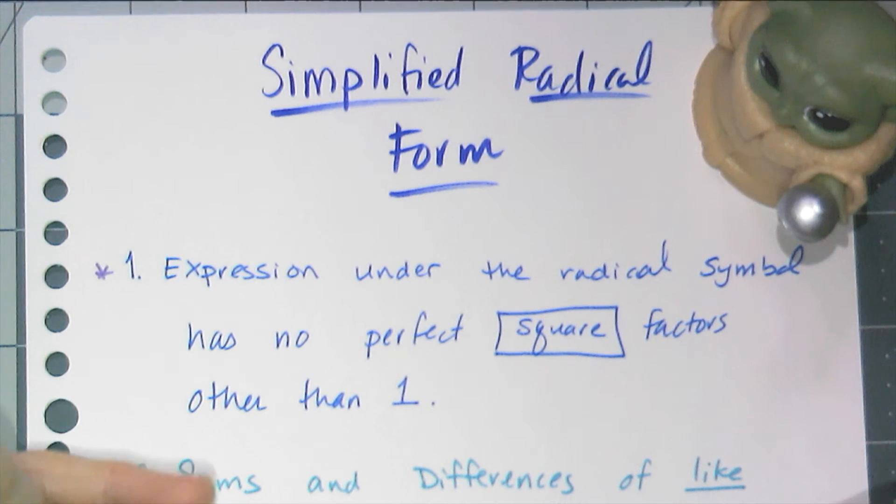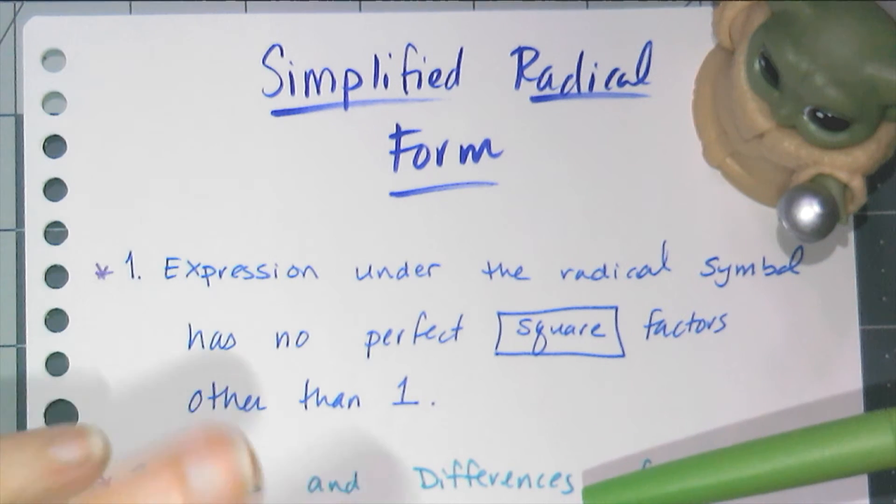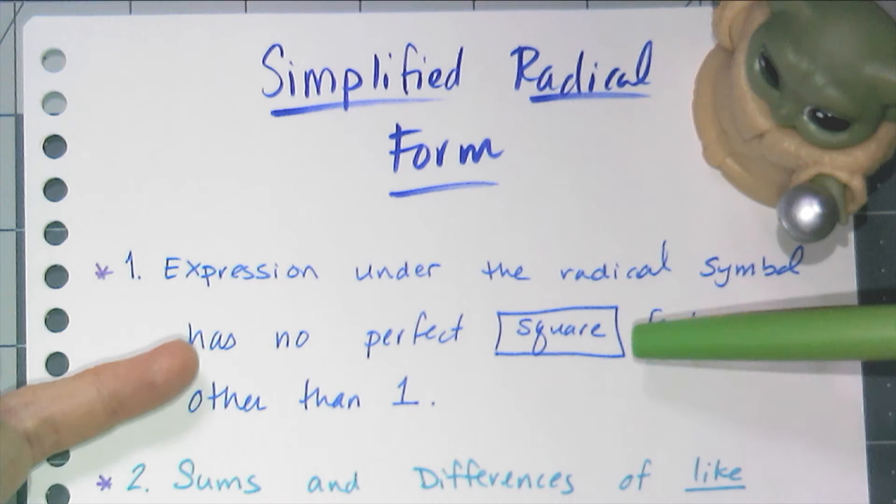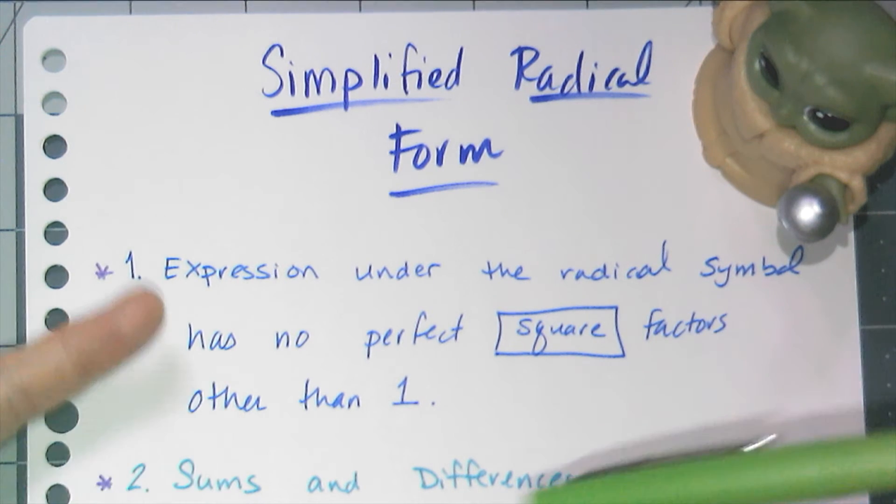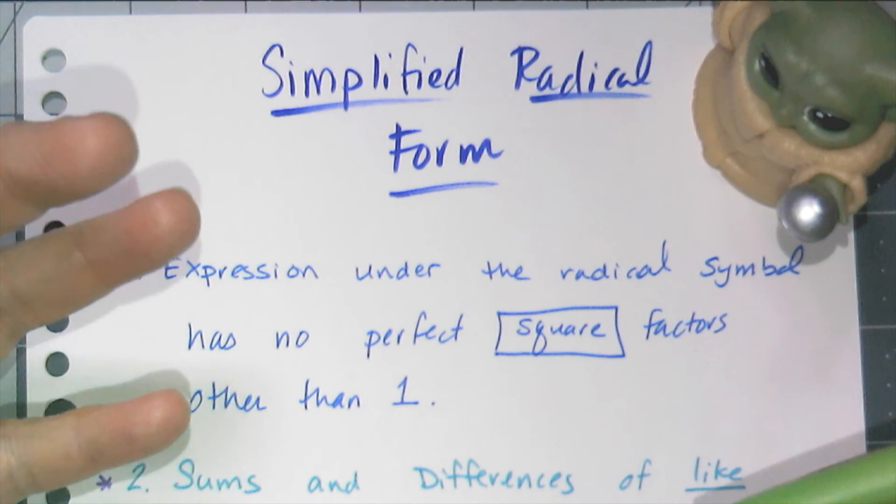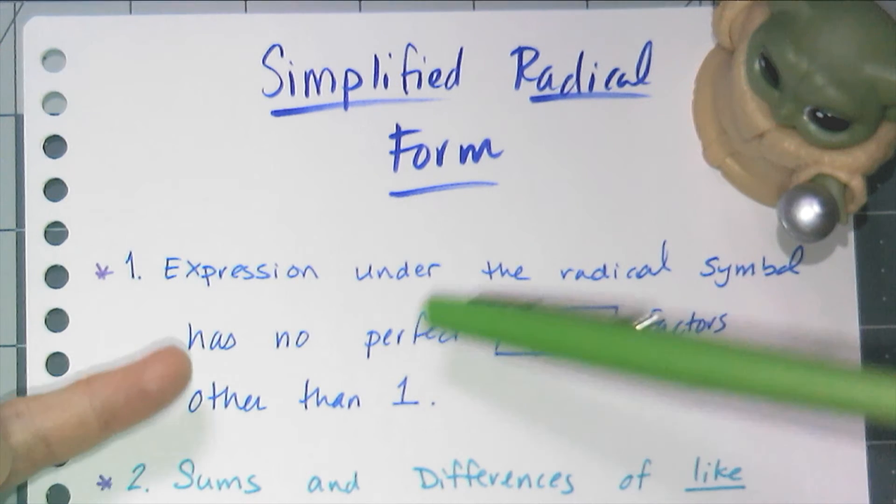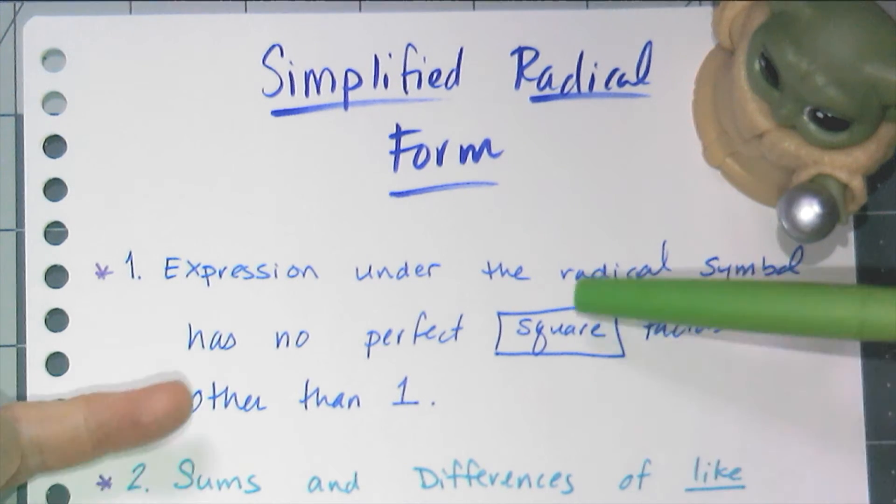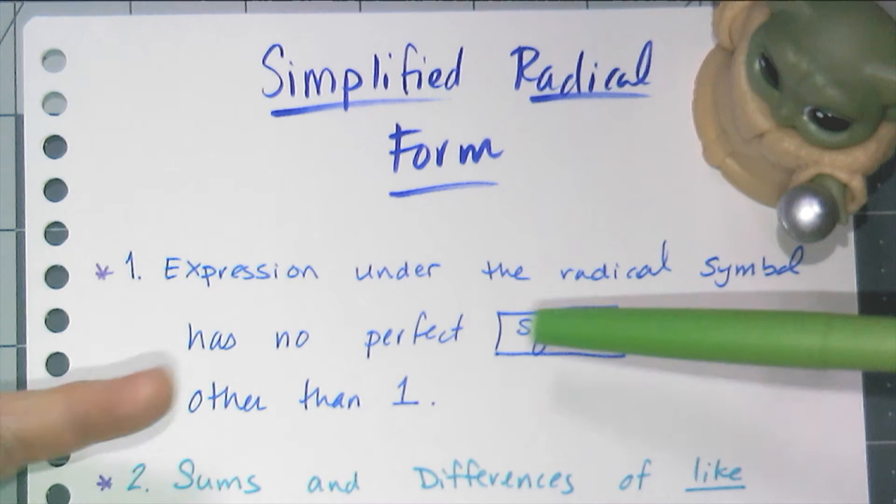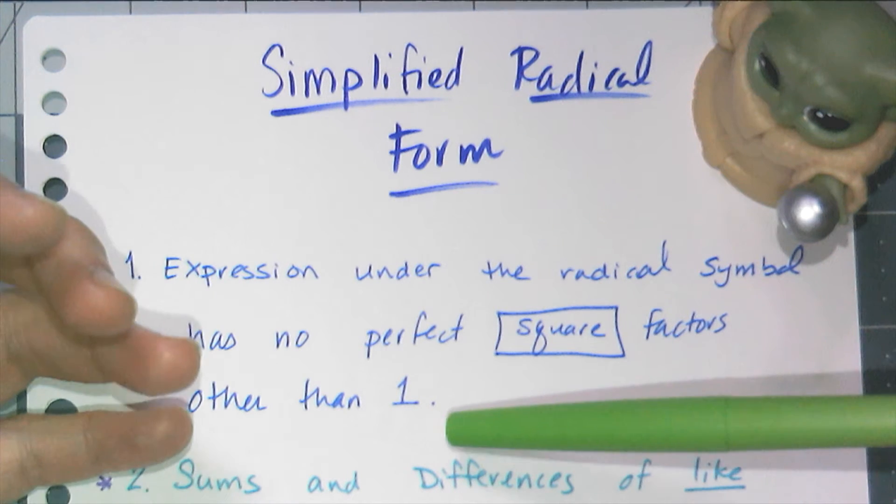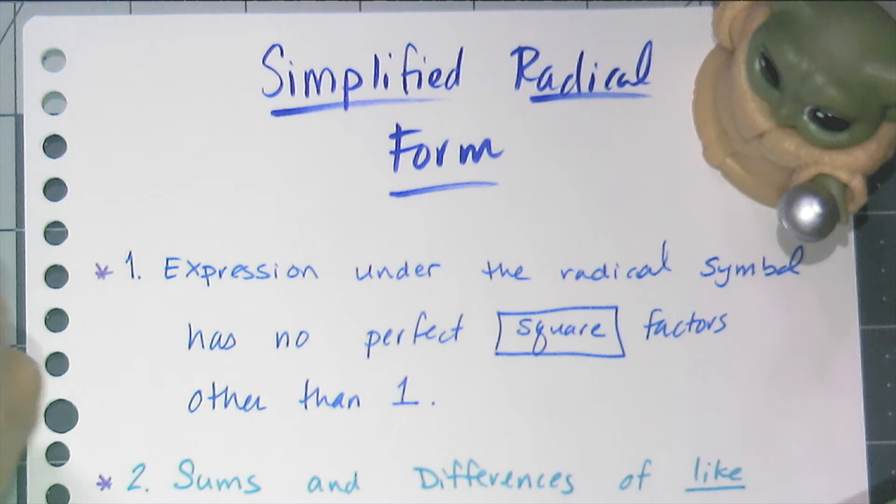In Algebra 1 we primarily deal with square roots. I'll occasionally throw a cube root in there, but it's mostly square roots, so we're going to be looking for perfect square factors when we have square roots. But if my index were 3, so I was trying to find a cube root, then I would be looking for perfect cubic factors. And so this is going to depend on the index of your radical. If you're trying to find the perfect fourth root, then I need something that's to the fourth power, other than 1.